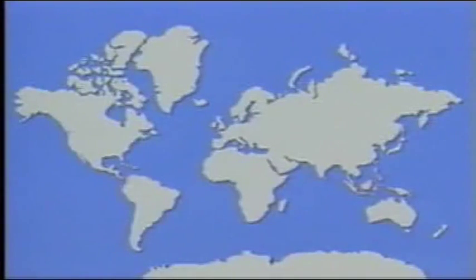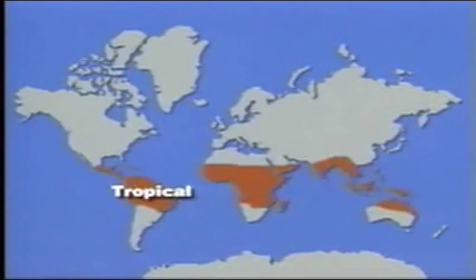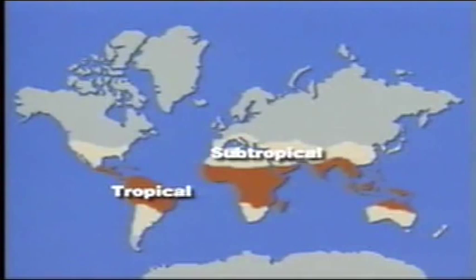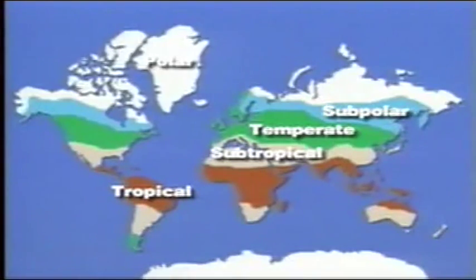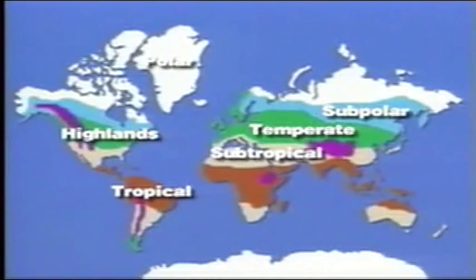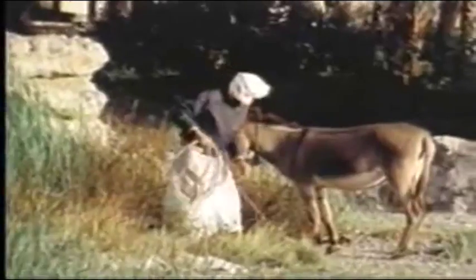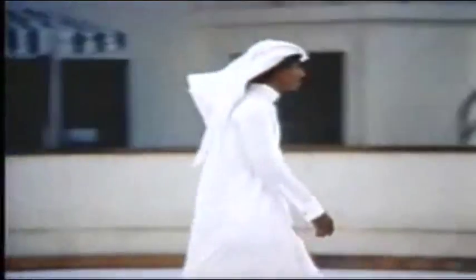Geographers divide the world into six main climatic regions: tropical, subtropical, temperate, subpolar, polar, and highlands. Each of these climatic regions is defined by both temperature and precipitation. Climate has a great impact on people's everyday lives — among other things, it affects what they wear and what kind of houses they live in.